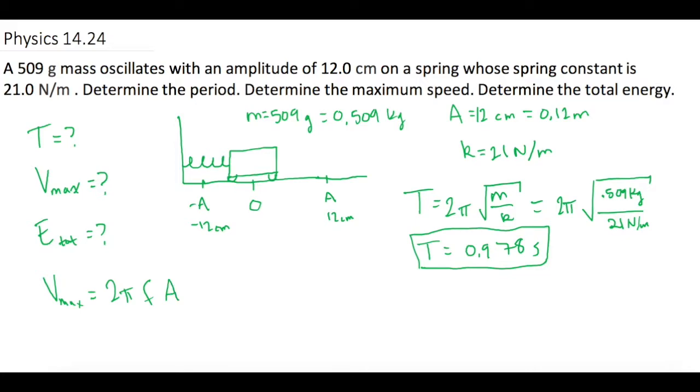But we don't have frequency. We could take T and calculate 1 divided by 0.978, and that would give us our frequency, and we can plug it in here. That's totally fine. I'm just going to do one step to save myself some calculator work.